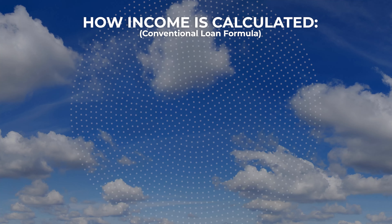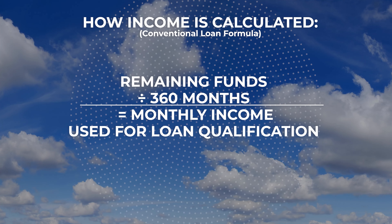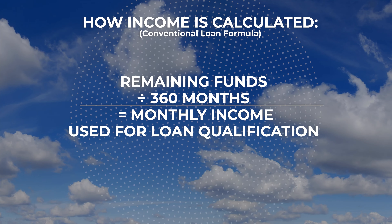So how is income calculated under an asset depletion scenario? Let's take a look at it using the most common type of asset depletion: a conventional loan. The lender will take your total liquid assets from all of your accounts, minus your down payment, settlement charges, and reserves — in other words, the cushion — and whatever's left over after closing is then divided by 360 months. That figure now becomes the income stream for your new loan qualification. On a conventional loan program, you are limited by the size of a conventional loan for a given area — for most areas here in Florida, as of the time of this recording, that conventional loan limit is $548,250.